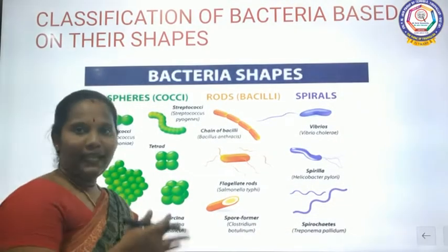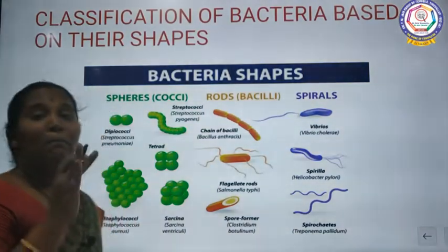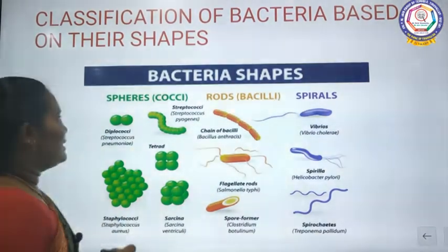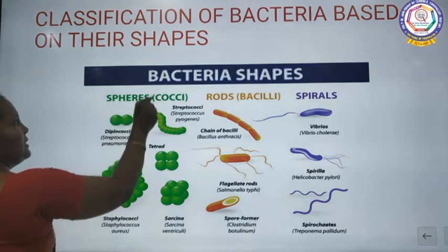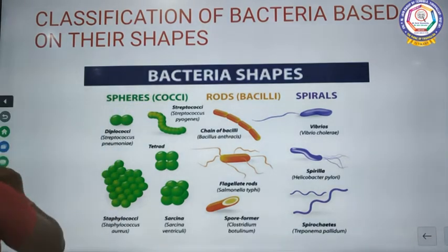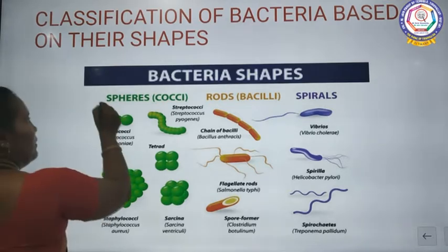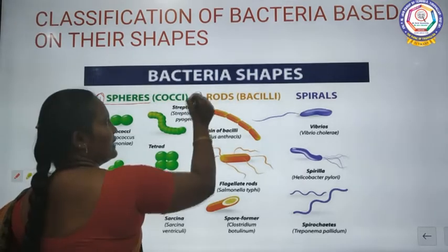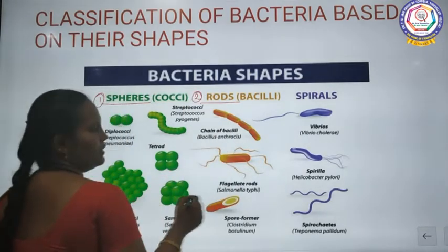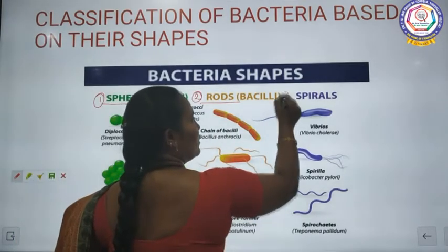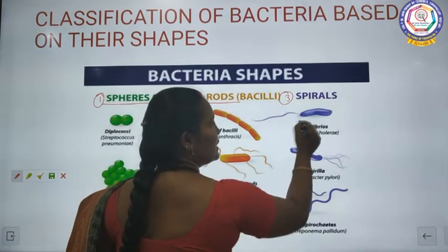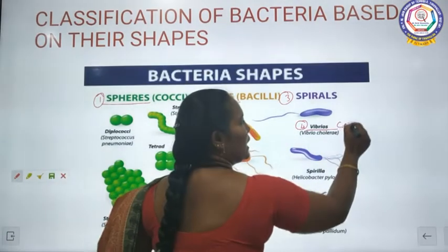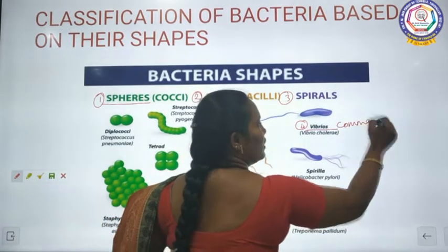Bacteria are classified based on their shapes. First one is spherical shape. Second one is rod shape. Third one is spiral shape. And the fourth one is vibrio or comma shape.